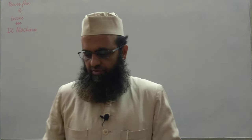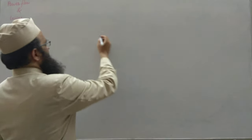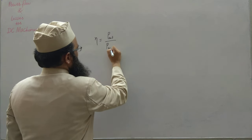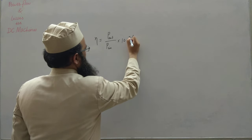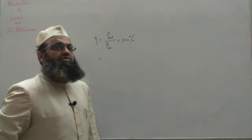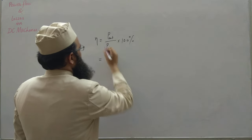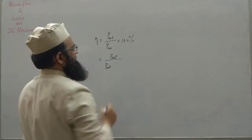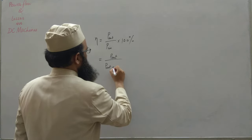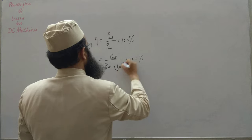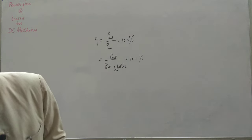In this lecture we will discuss power flow and losses in DC machines. For any machine, efficiency can be written as output power upon input power into 100%. The same can be written as output power upon output power plus losses, into 100%. We will first discuss the various losses in DC machines and then discuss power flow in DC machines.